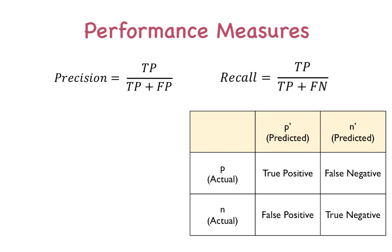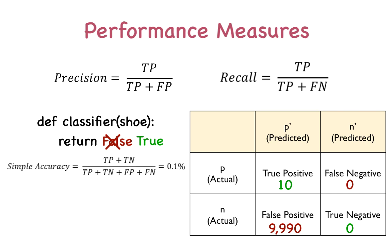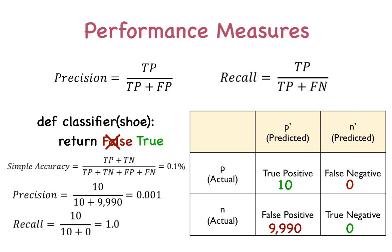Now let's change the problem and say that all shoes were predicted Nike instead of not Nike. With this new classifier, true positives are 10, false negatives and true negatives are zero, and false positives are 9,990. In this case, accuracy is 10 divided by 10,000, precision is also 10 divided by 10,000, and recall is one. The system has a high recall but ridiculously low precision, which indicates poor performance. These measures taken together are quite accurate in determining the performance of a system.